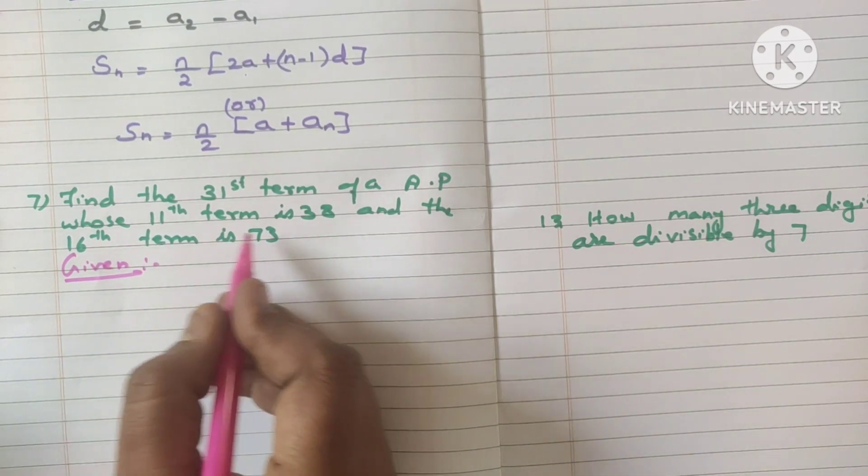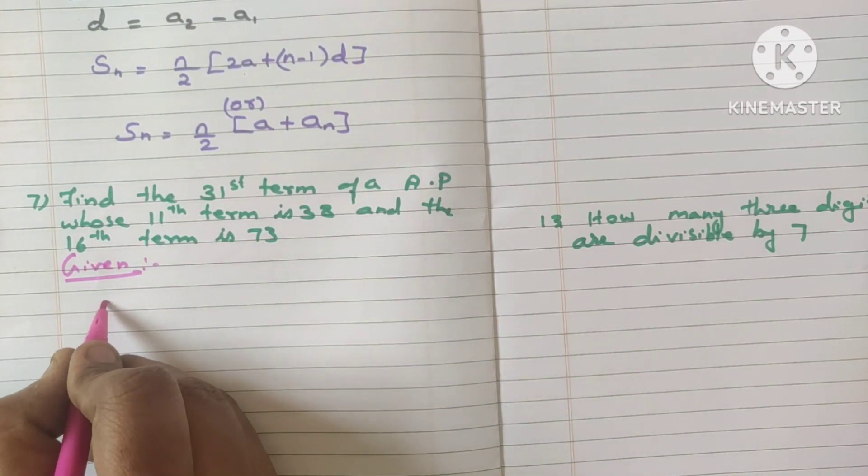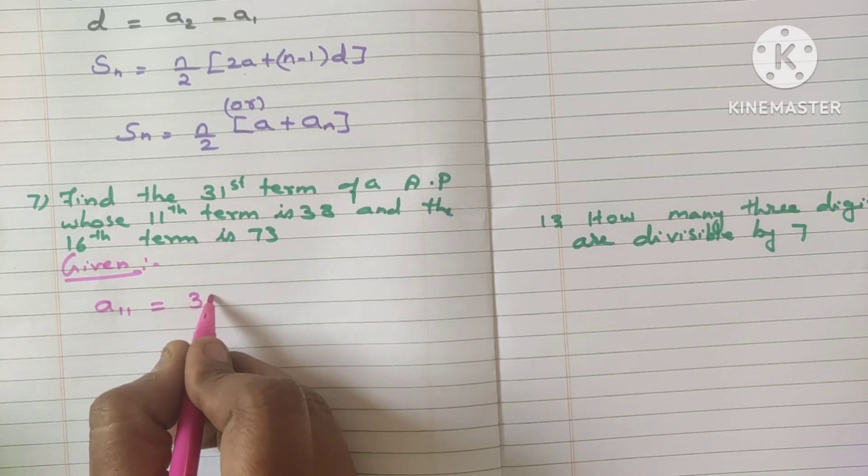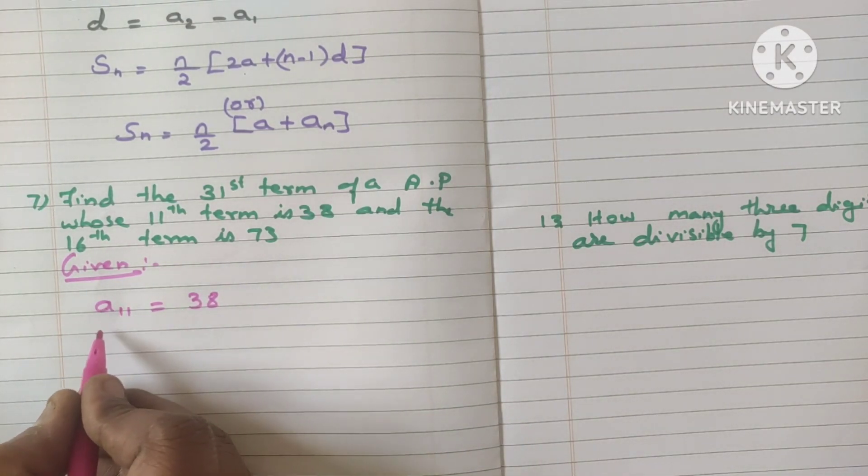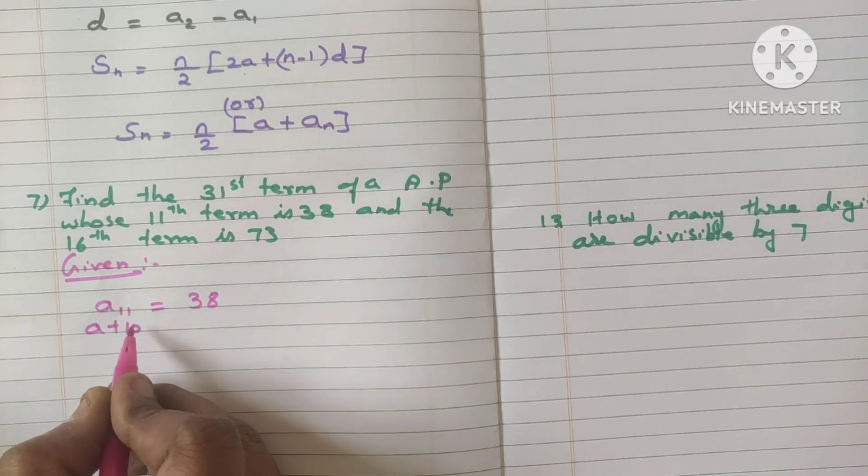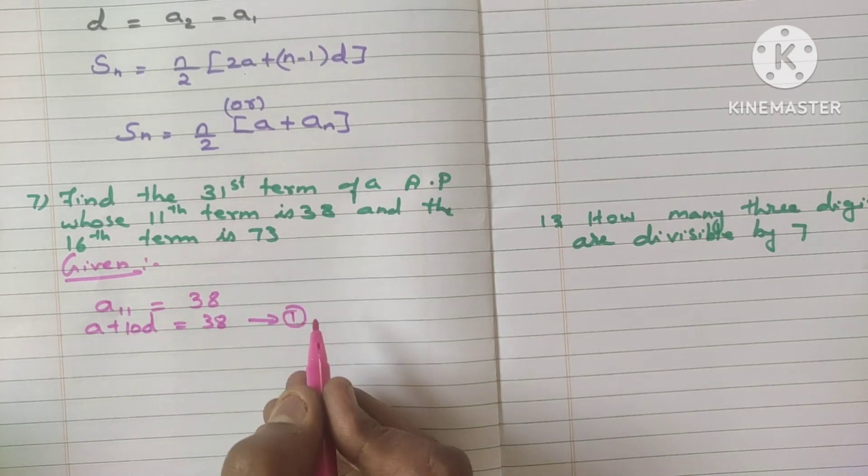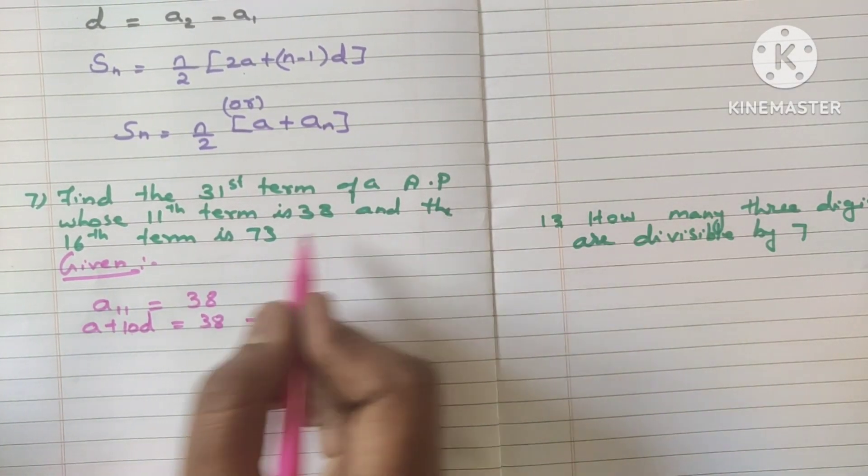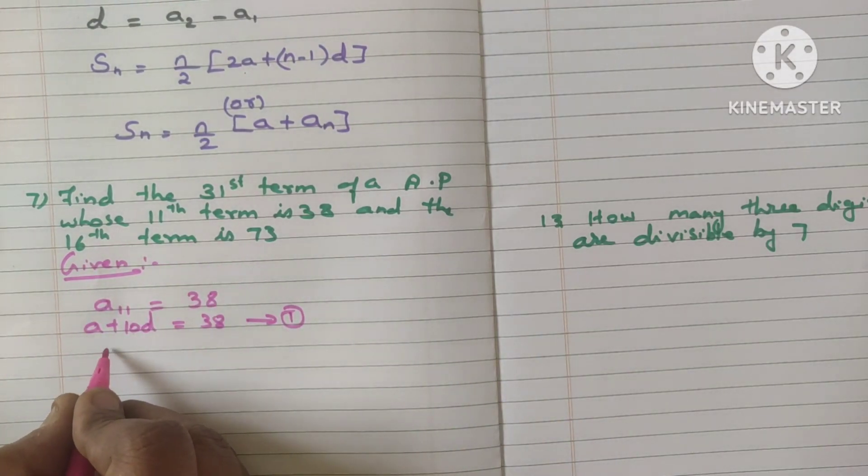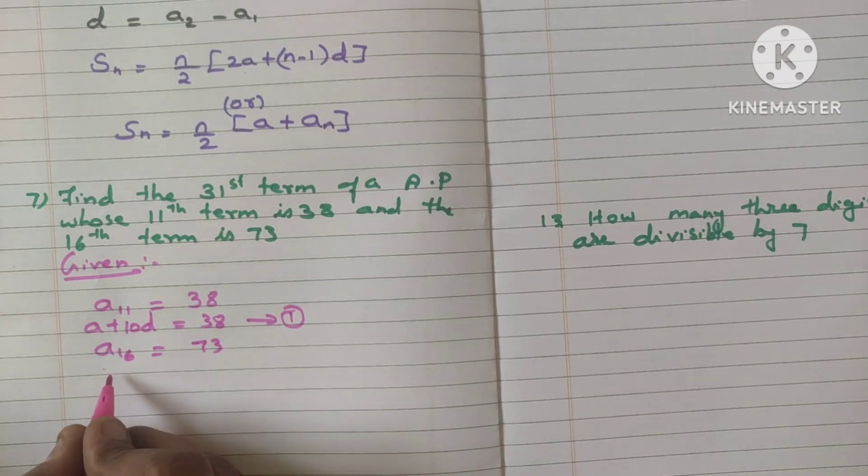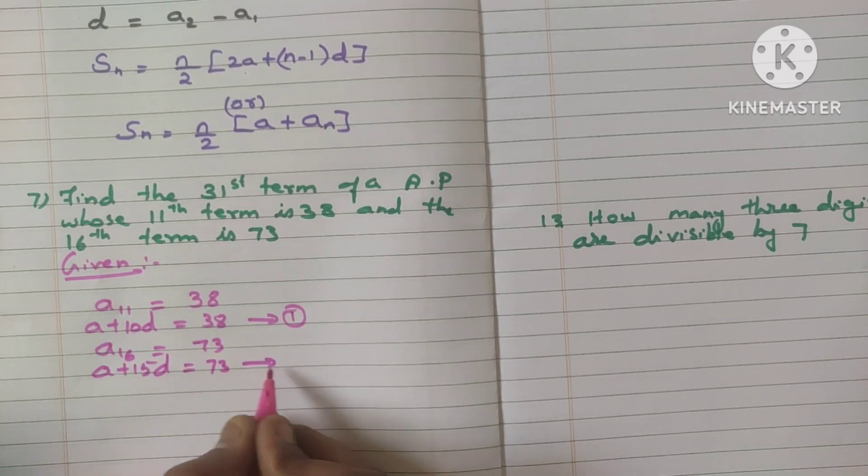31st term they ask you to find out. Whose 11th term is 38. So how to represent this 11th term? 11th term is represented as a11. Am I correct? Which is equal to 38. But 11th term, what is the formula for writing 11th term? A plus 10d. Because n minus 1. N is here 11. So 11 minus 1 is nothing but 10d, is equal to 38. Make it as equation number 1. Same way. What is the next clue given? The 16th term is 73. So how to represent 16th term? A16 is equal to 73. So A16 can be represent as A plus 15d is equal to 73. This is the equation number 2.